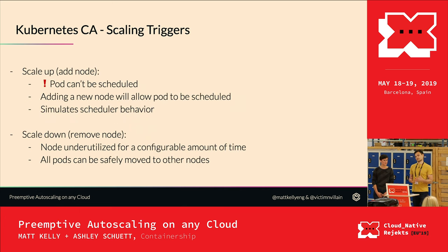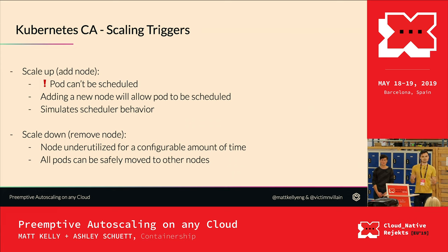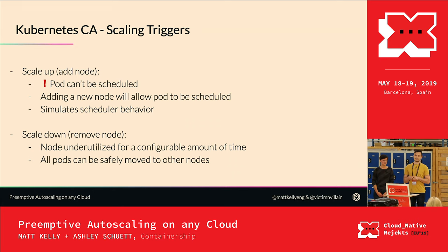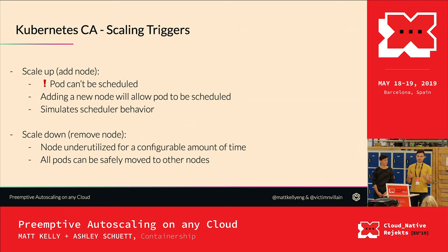Just because it's purely Kubernetes concepts doesn't mean it's a simple controller — it's actually pretty complex. For scale-up, it only scales when it sees a pod can't be scheduled. It basically simulates scheduler behavior internally by pulling in the scheduler code, and it decides if adding a new node will actually allow the pod to be scheduled. It doesn't want to waste resources — it will only scale up if it truly will use that node.